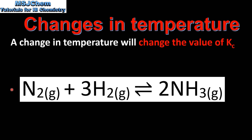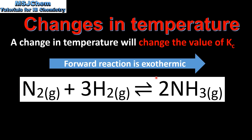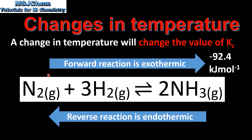So let's look at the equation for the Haber process. The forward reaction is exothermic — the enthalpy change is negative 92.4 kilojoules per mole. If the forward reaction is exothermic, the reverse reaction is endothermic, and the enthalpy change for the reverse reaction is positive 92.4 kilojoules per mole.